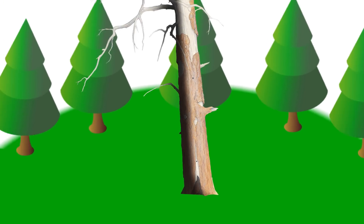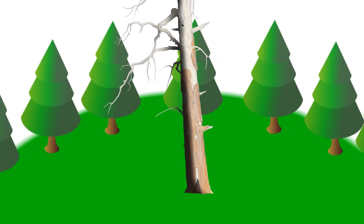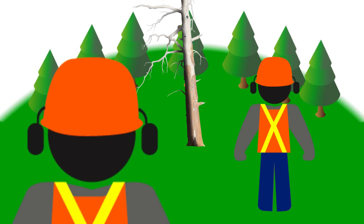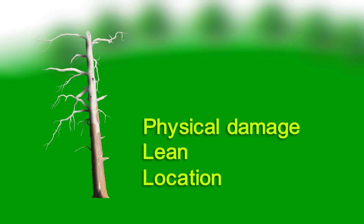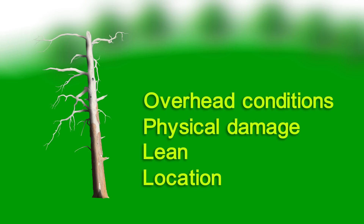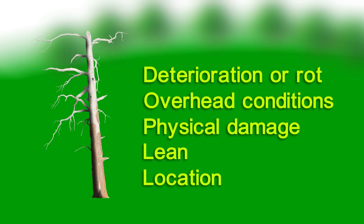A dangerous tree has two important elements: a hazard and exposure to people. The hazard could be the location of the tree or its lean. It could be that the tree has been physically damaged. The tree may have overhead conditions, or the tree could be deteriorating — whether in its limbs, stem, or root system — and of course it could be any combination of all these factors.